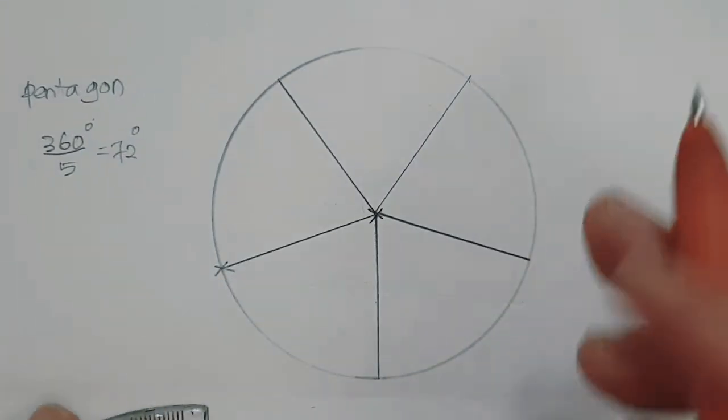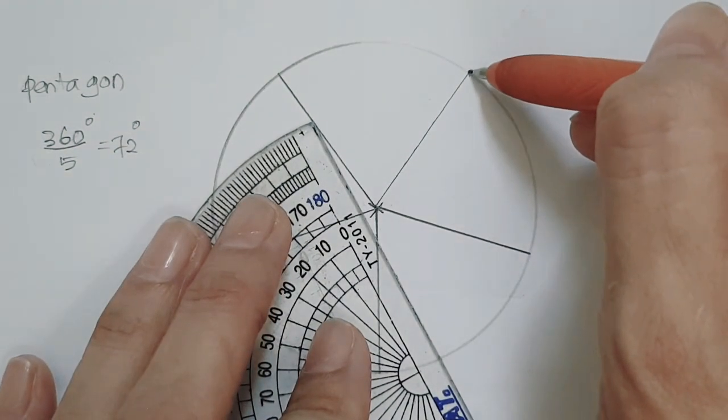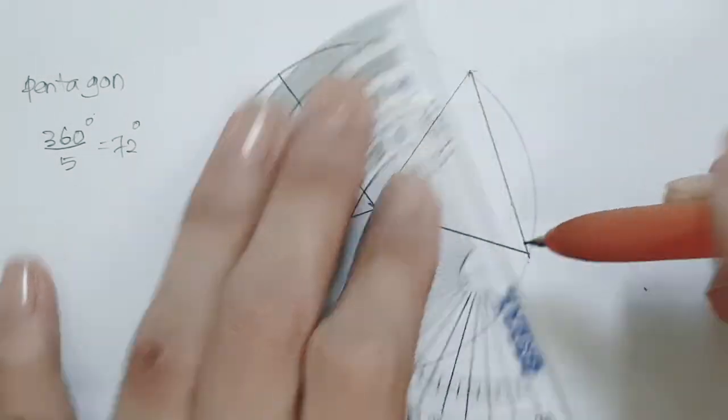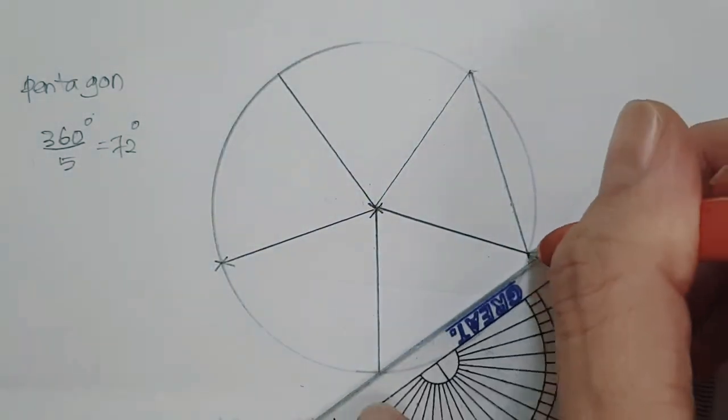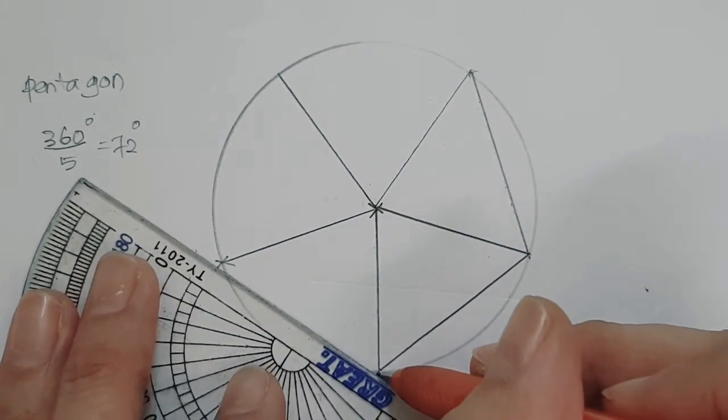Okay, and the last part, we just join the adjacent points on the circumference, and that will give us the side of our polygon, in this case, pentagon.